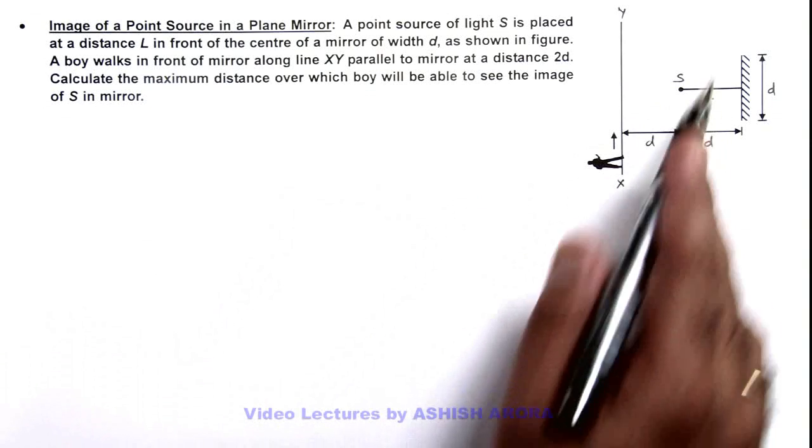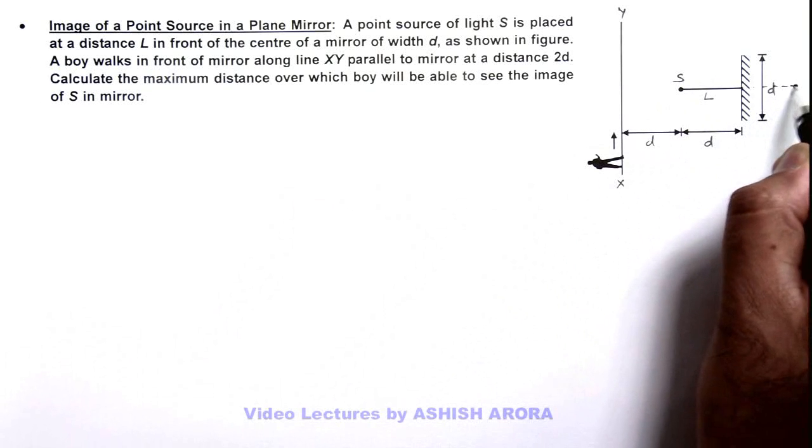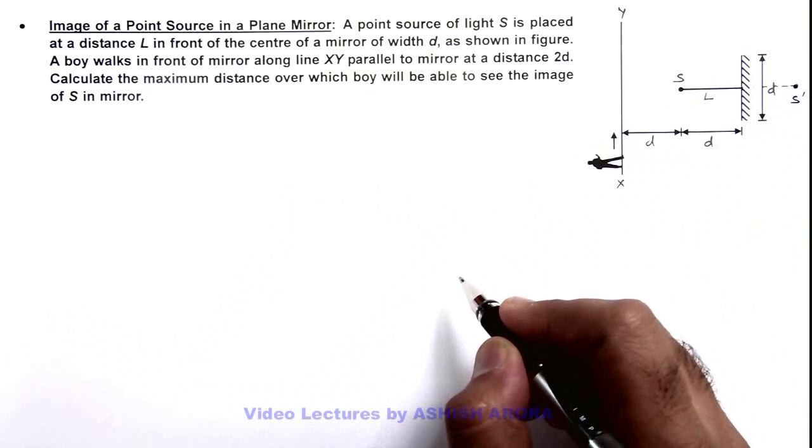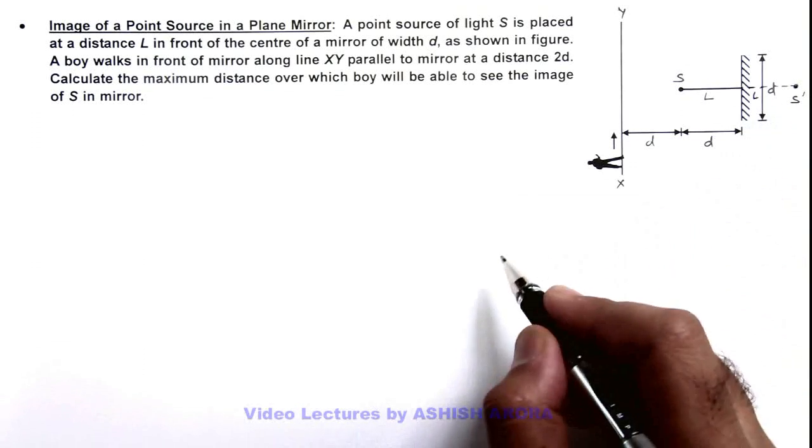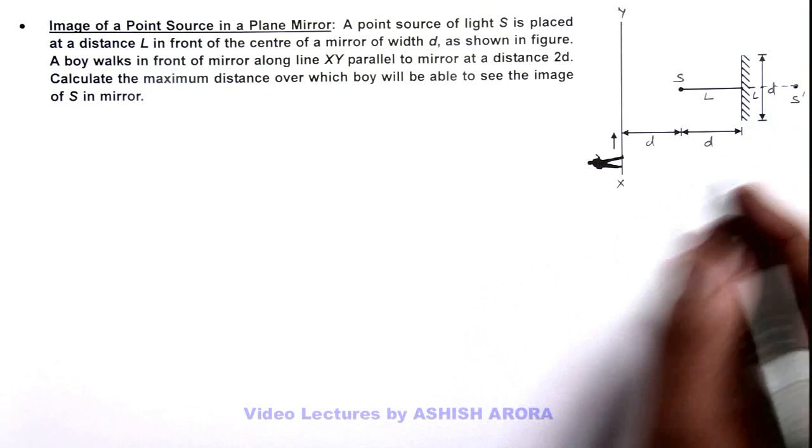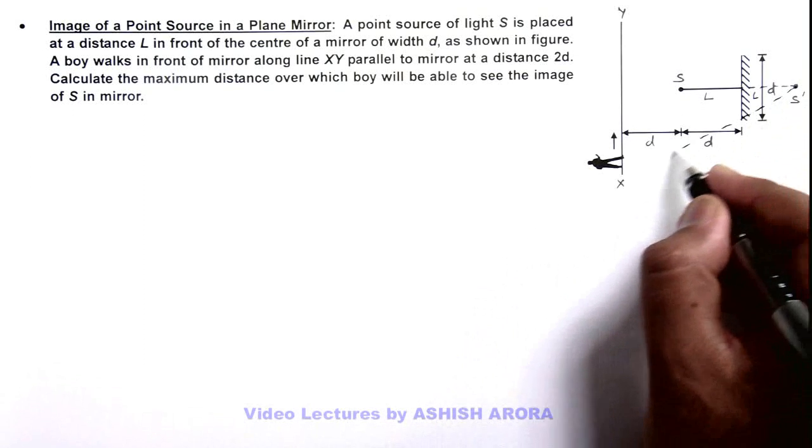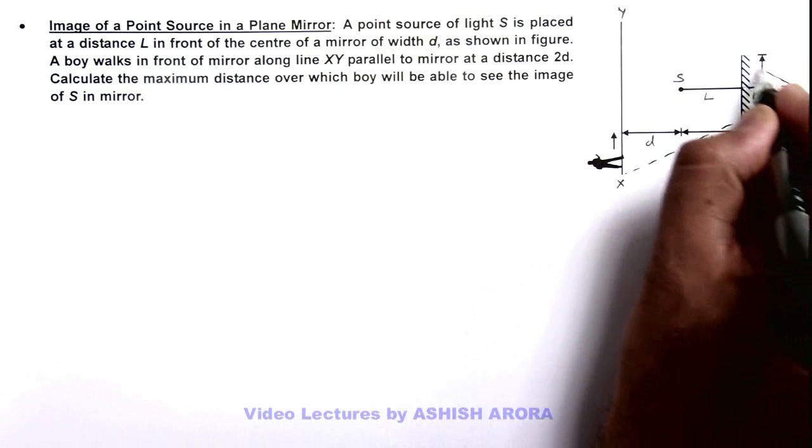As we know in a plane mirror, its image is produced at the same distance behind the mirror. This is S dash where the image will be seen, and it is at a distance L behind this mirror. Here, if we just draw the field of view of this S dash, we can join this S dash with the edges of mirror.